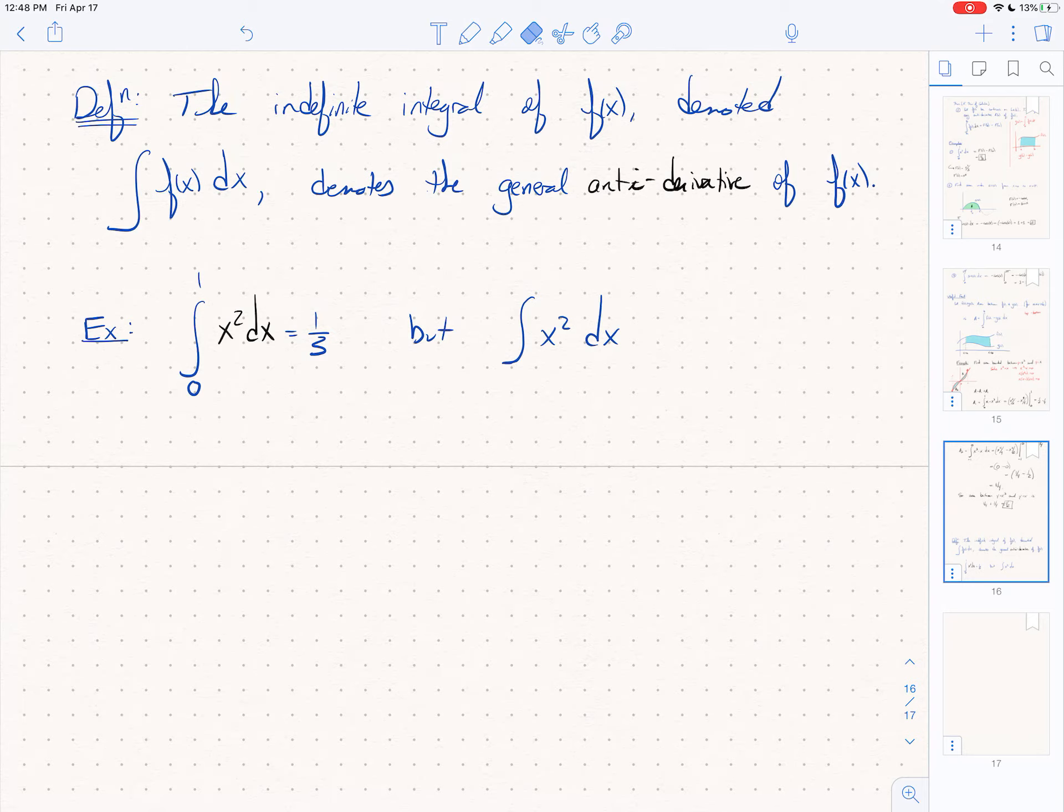All right, so this is the lecture over section 5.5 for what's going to become homework 27. We're going to learn today how to undo the chain rule, is the plan.